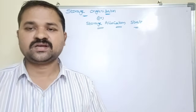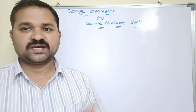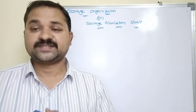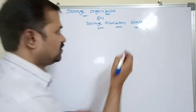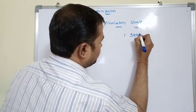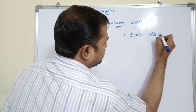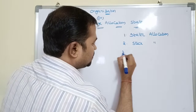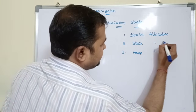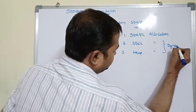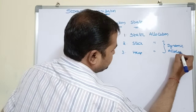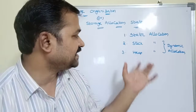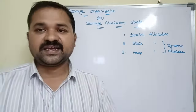There are three types of storage allocation strategies: static allocation, stack allocation, and heap allocation. Stack allocation and heap allocation come under dynamic allocation. So mainly we have two allocation strategies: static allocation and dynamic allocation. In dynamic allocation we have stack allocation and heap allocation.